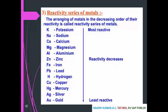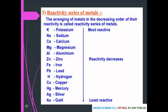Reactivity series of metals: the arrangement of metals in decreasing order of their reactivity is called the reactivity series. From most to least reactive: potassium, sodium, calcium, magnesium are most reactive; then aluminium, zinc, iron, hydrogen; then copper, mercury, silver, and gold — which are the least reactive.